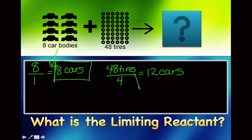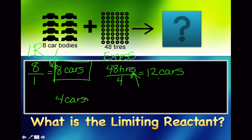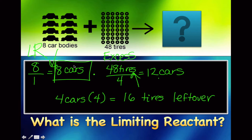That means the car bodies are the limiting reactant, and the tires are in excess — I have extra of them. If we wanted to figure out how many extra, we have enough tires left over for 4 more cars, and with 4 tires per car, that means 16 tires are left over. So 8 cars were made, all the car bodies were used up, and 16 tires remained.